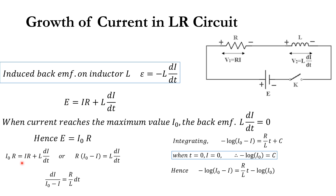Our governing equation becomes: I₀·R equals I·R plus L·dI/dt. Rearranging, R·(I₀ minus I) equals L·dI/dt.